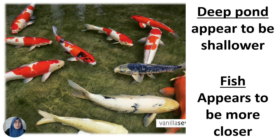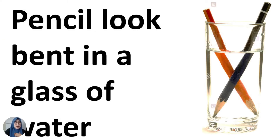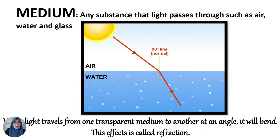An example of refraction of light: in a deep pond, it appears to be shallower, and fish appears to be closer. A pool appears shallower than its actual depth. Another example is a pencil appears bent in a glass of water.